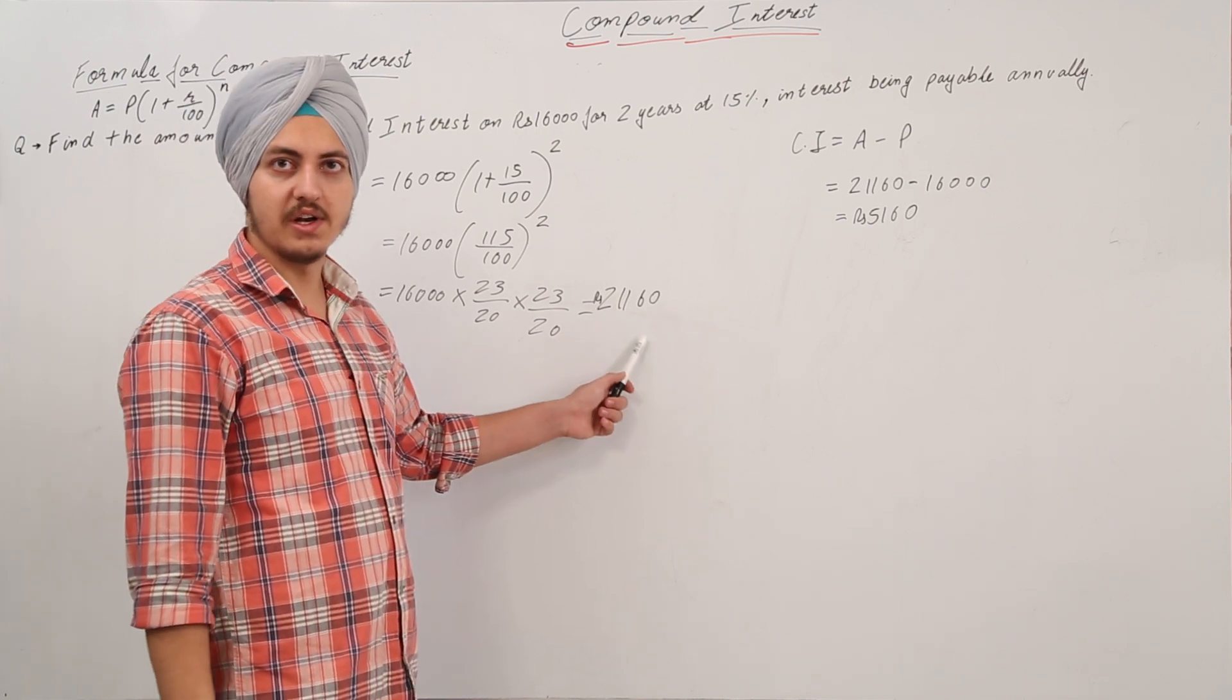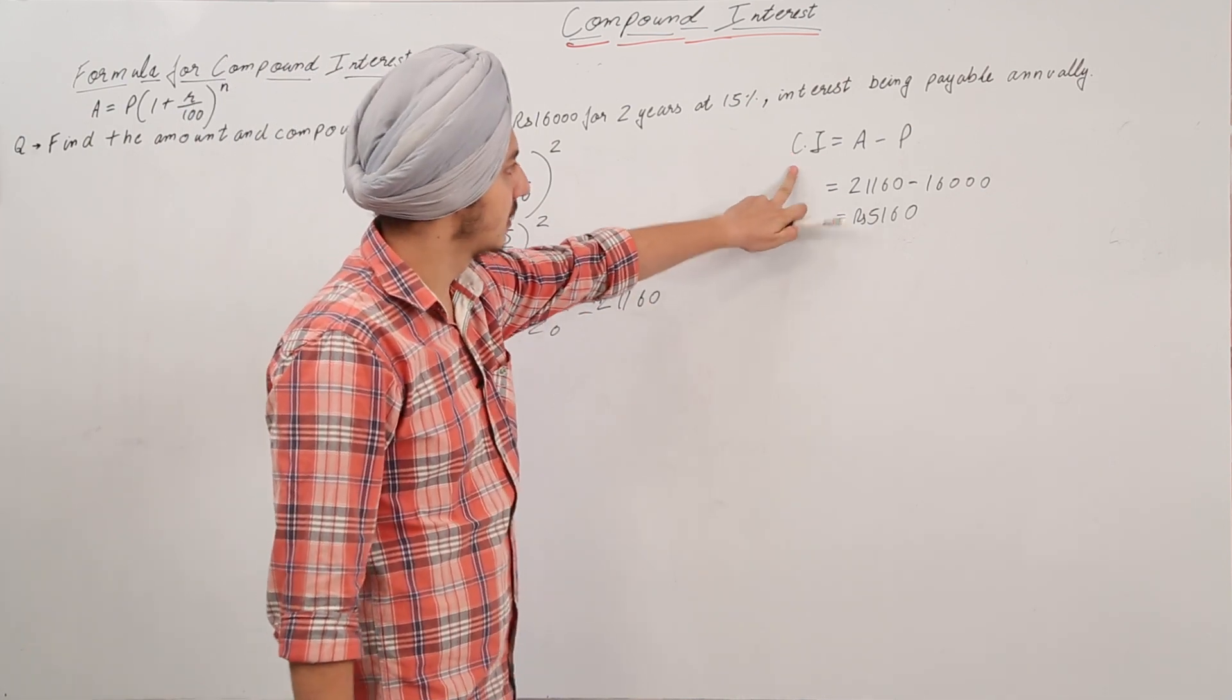So after two years, the total amount is equal to 21,160 rupees and the total interest is equal to 5,160 rupees.